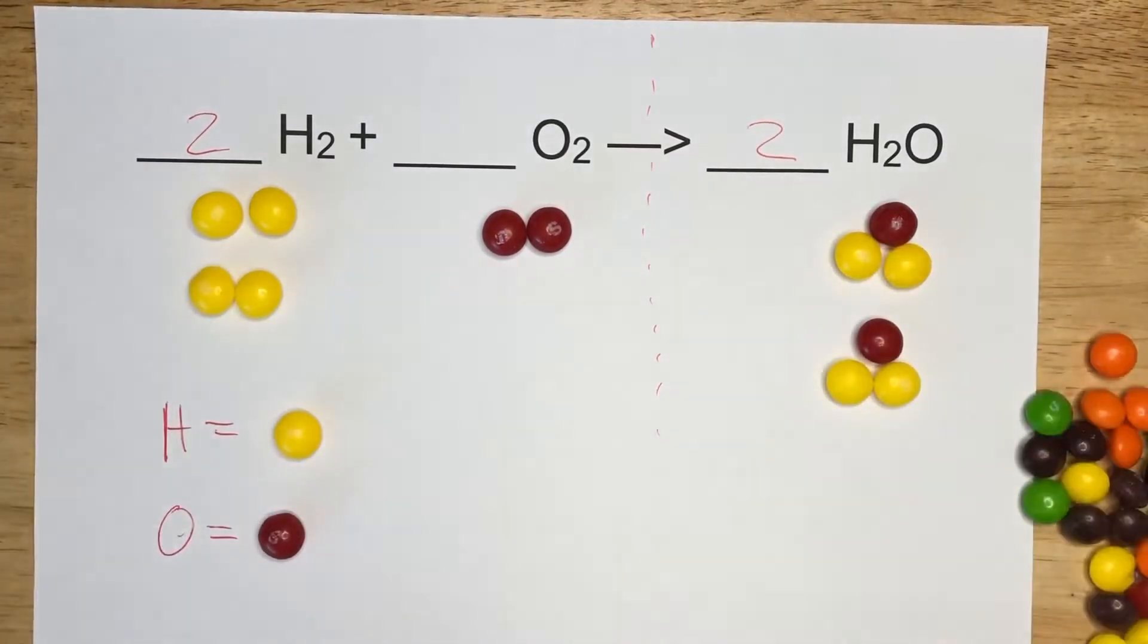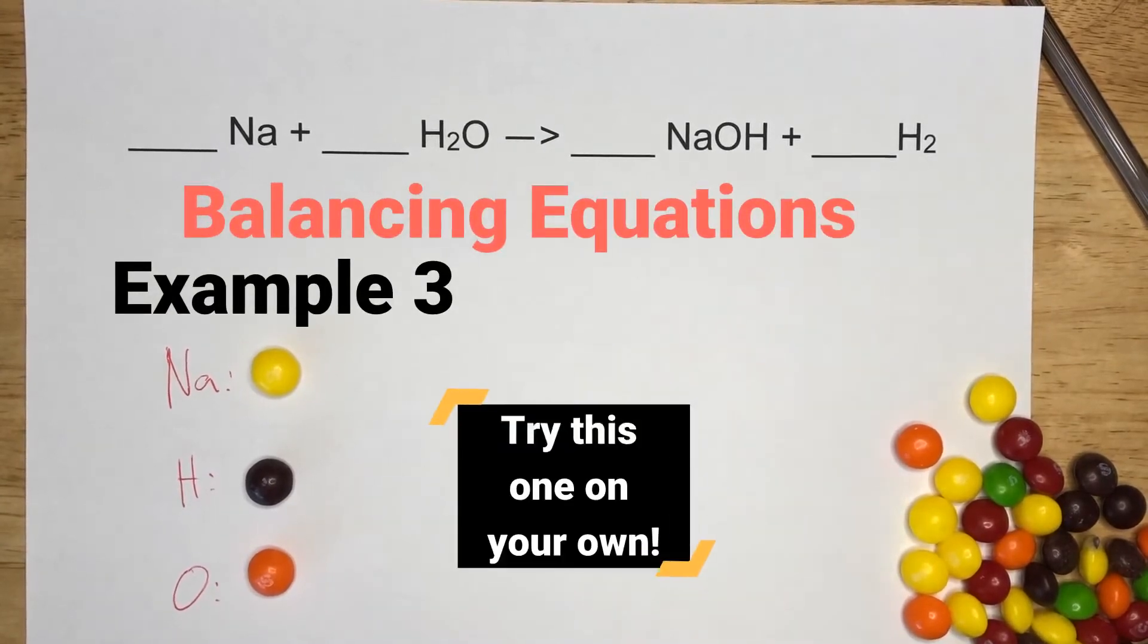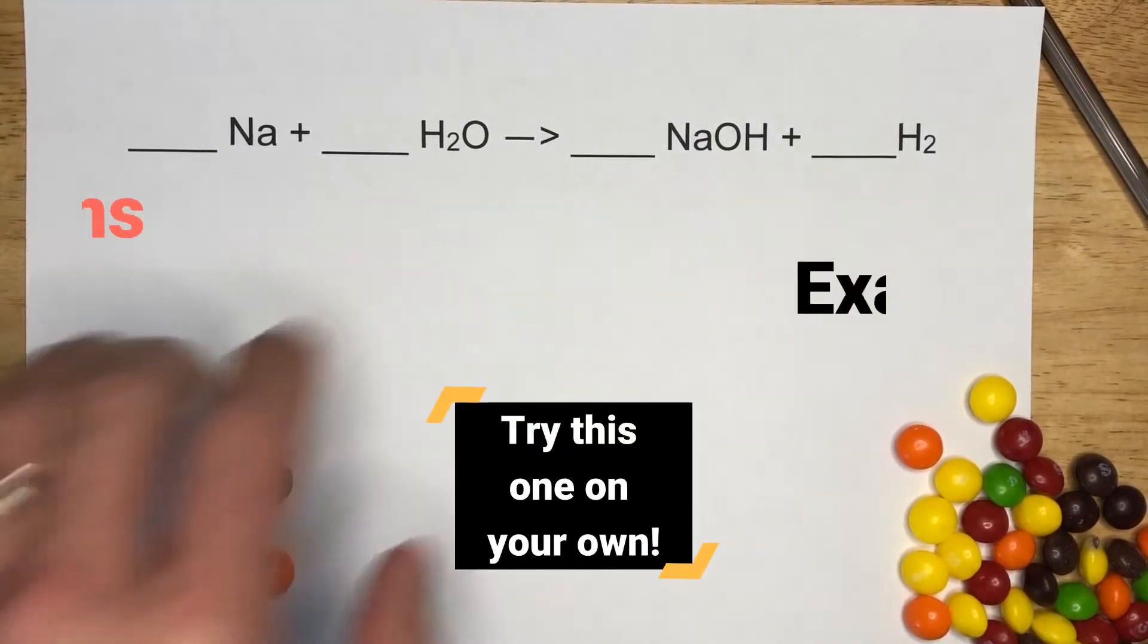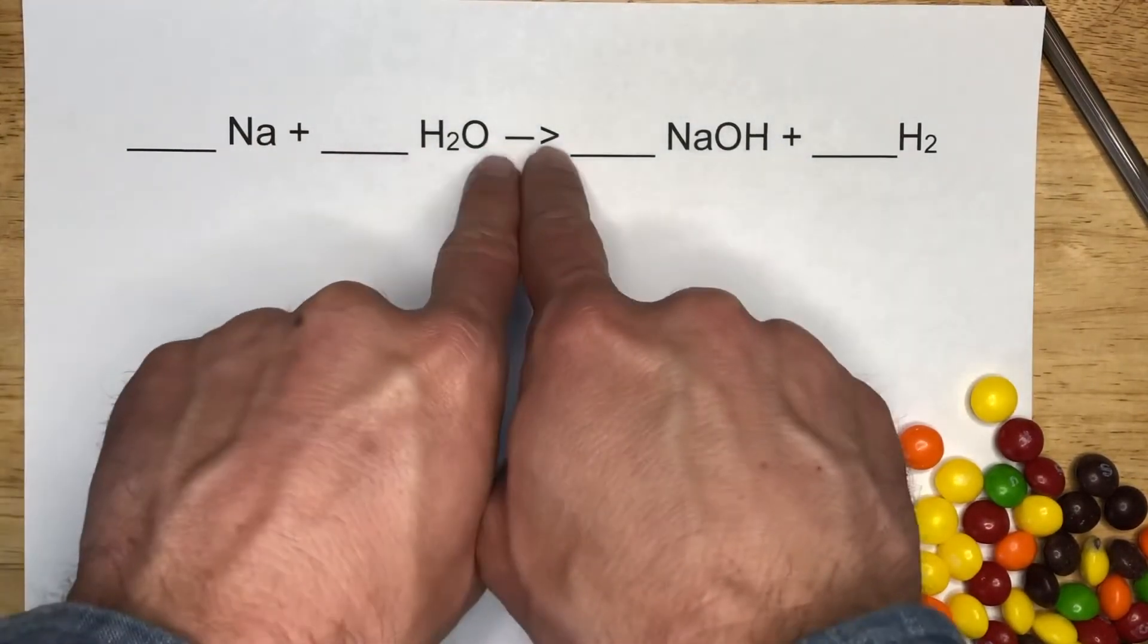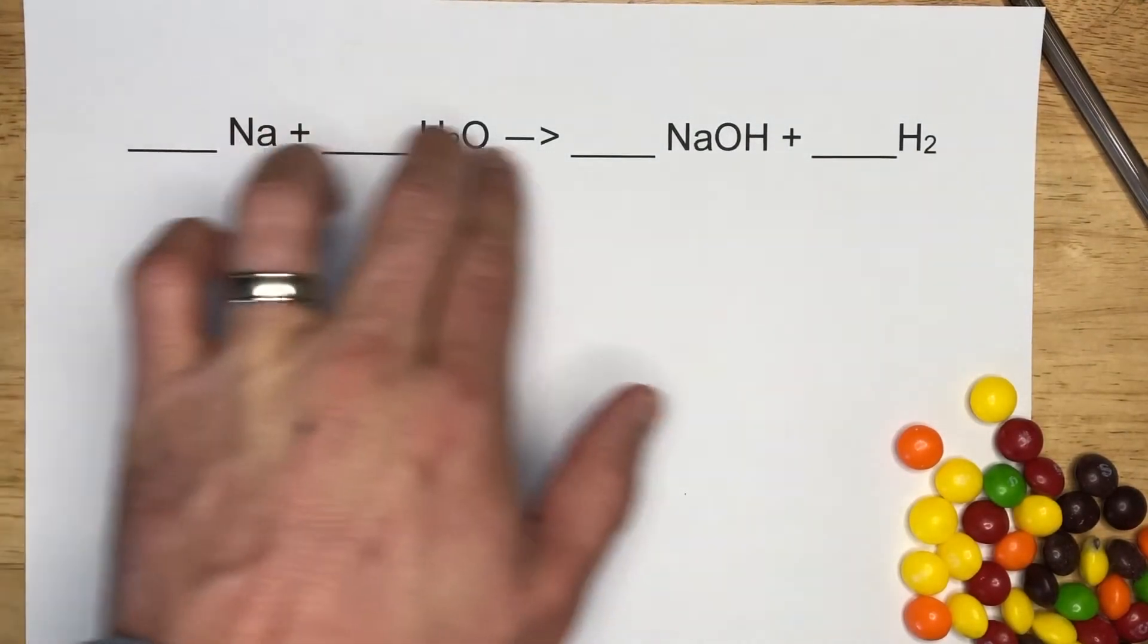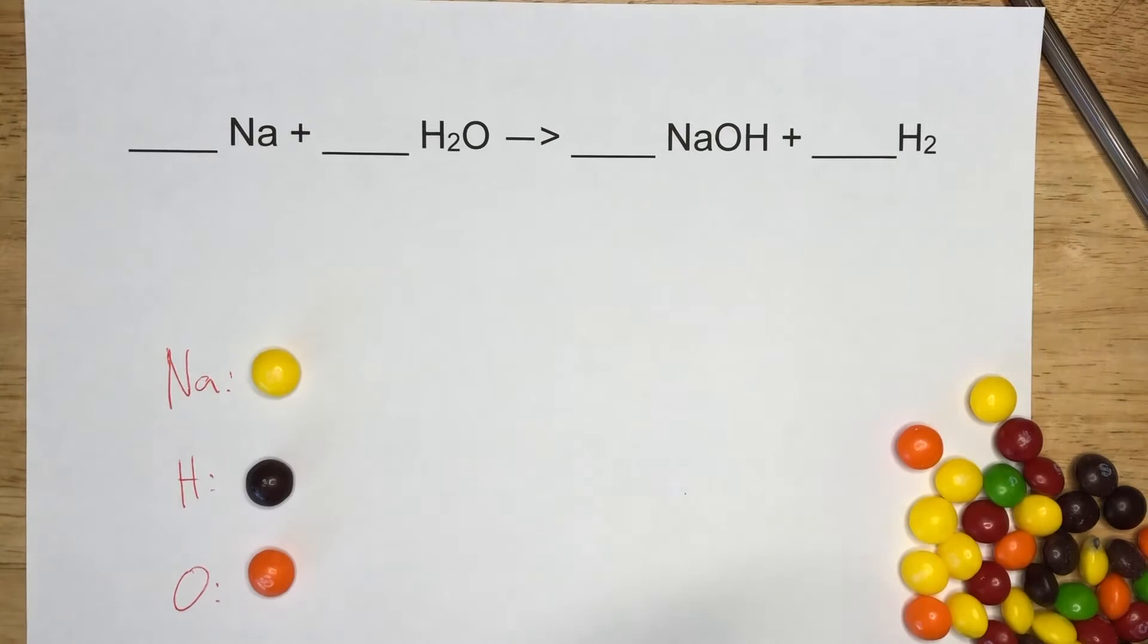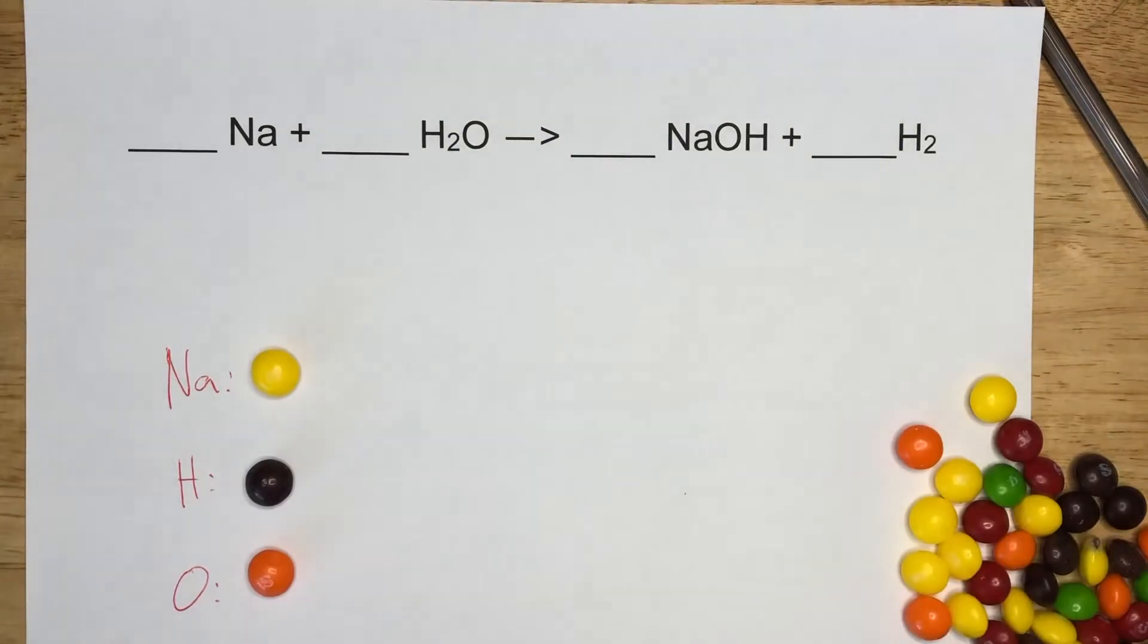I want you guys to try one on your own now. Take a look at these colors that I assign each atom. Take a look at the equation. Notice it's Na plus H2O produces NaOH and H2. So how can we balance this out? You're going to add coefficients in these blank spaces, and I would also encourage you to either draw using markers or, if you have some Skittles or candy lying around or some other manipulative, you can use to build the molecules and the atoms like I built the other two examples as well.